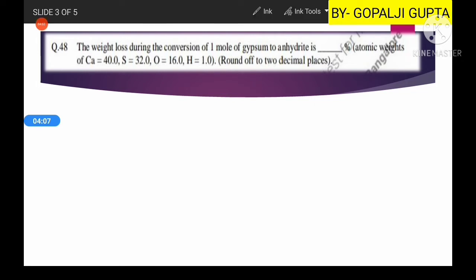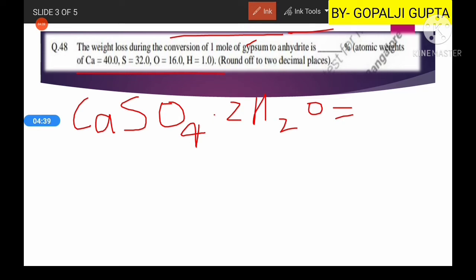Weight loss during conversion of one mole of gypsum to anhydrite. This is also simple. What you need is to remember the formula of gypsum. The formula of gypsum is CaSO4·2H2O. We can calculate the total molecular weight for gypsum. That is 40 plus 32 plus 4 into 16 as oxygen has 4 atoms, so it is 64. Then H2O calculation will be 36.